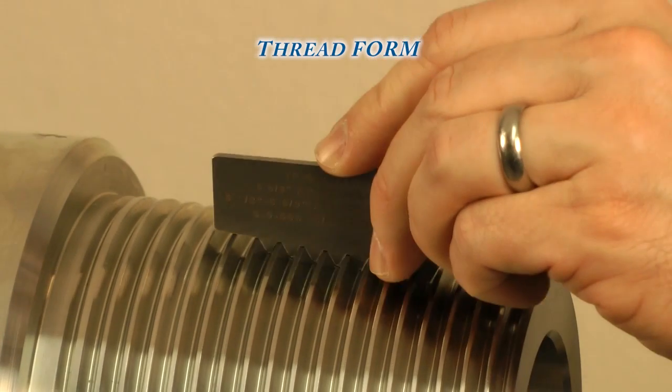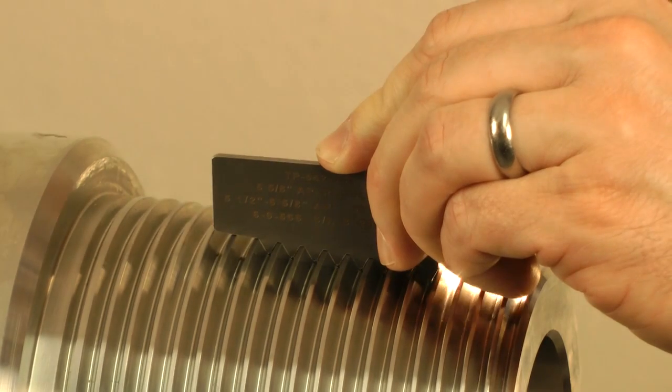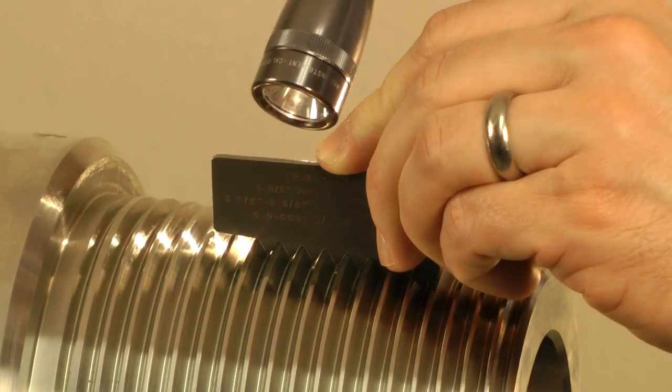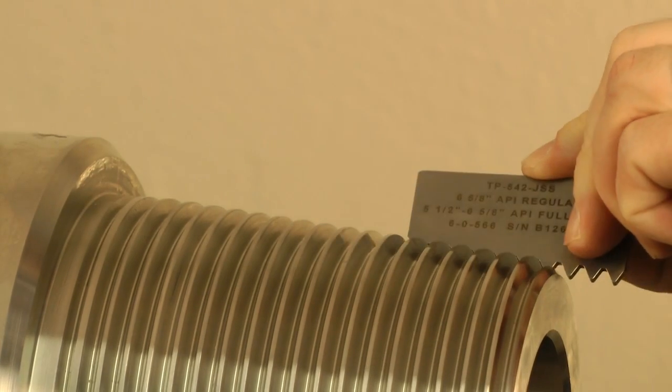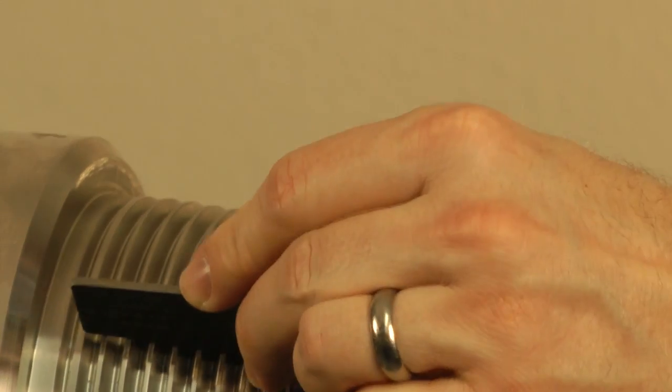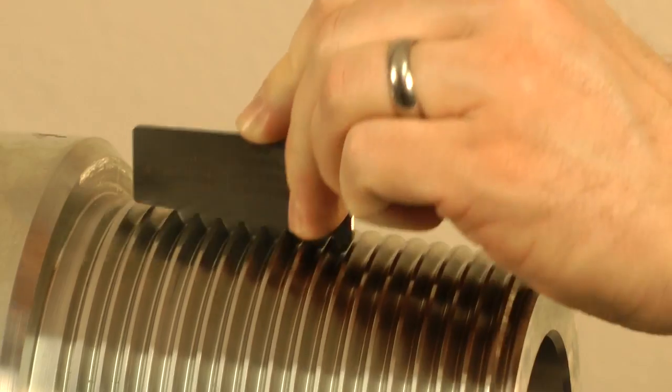Quickly verify a correct thread form with a GaugeMaker thread profile. Shine a light behind the profile to detect any steps or signs of a chipped insert. A profile that stands too far out of the threads or allows excess light to shine through can be an indication of lead error.